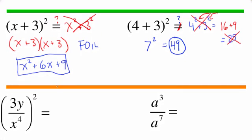Let's do a couple more problems — these ones will involve quotients. When you have a quotient to a power, you apply the power to the numerator and apply the power to the denominator. So 3y squared is going to be 9y squared, all over — now the denominator is x to the fourth, but that's going to be squared, which means x to the fourth quantity squared: 4 times 2 is 8, giving x to the eighth. That's the final answer.